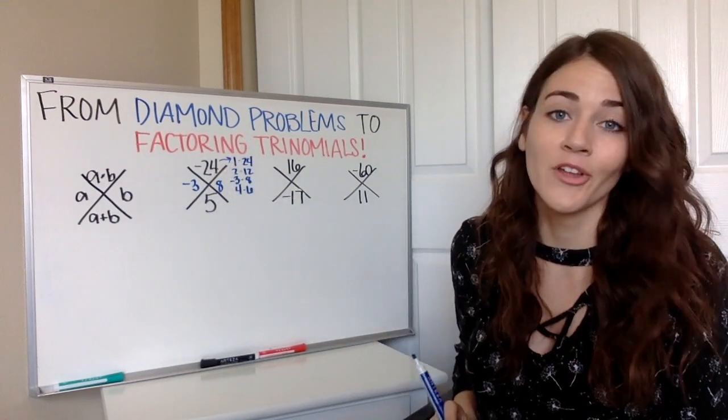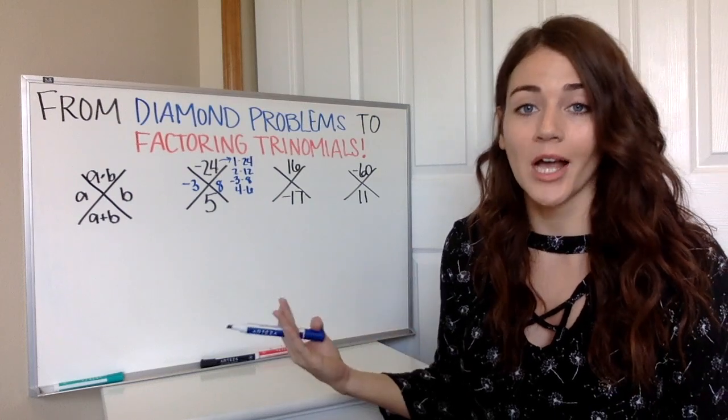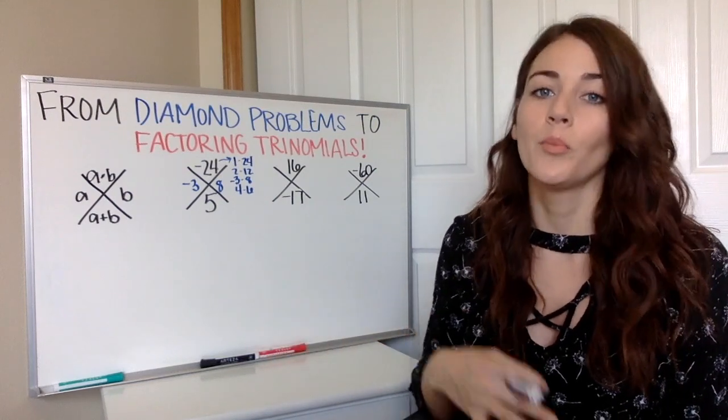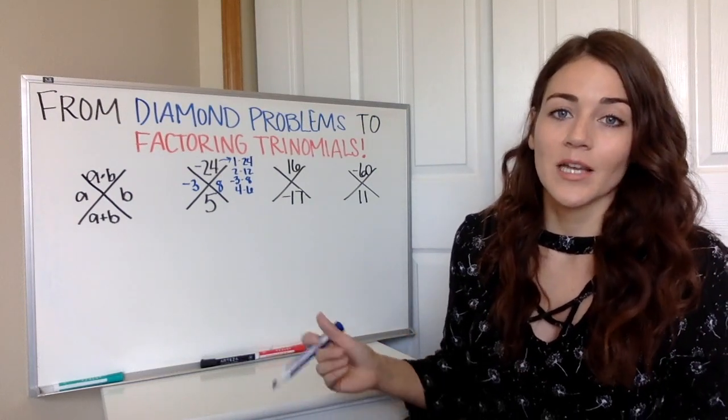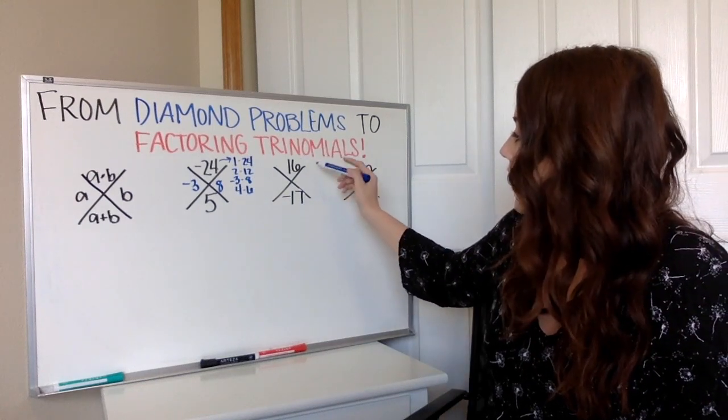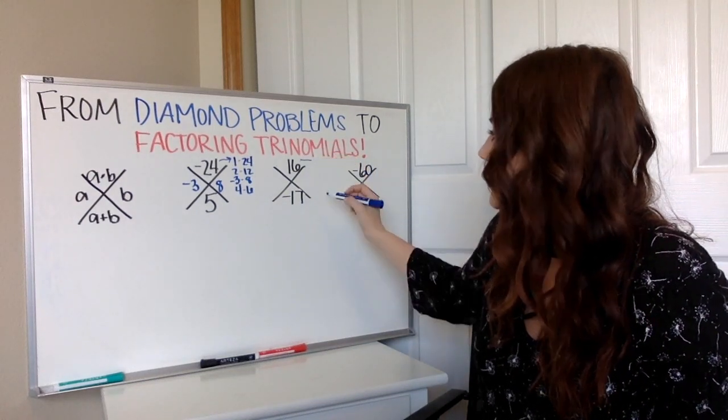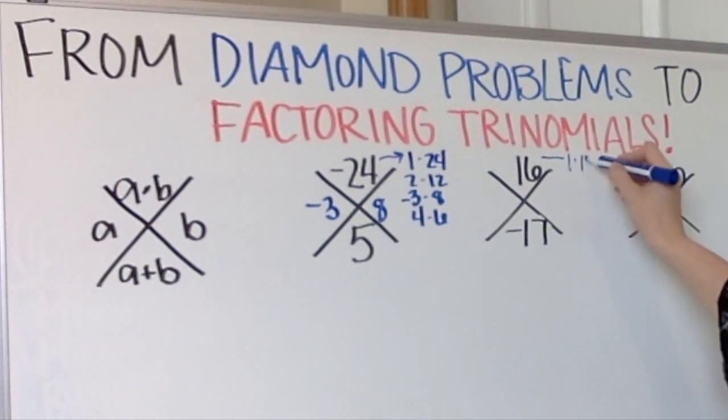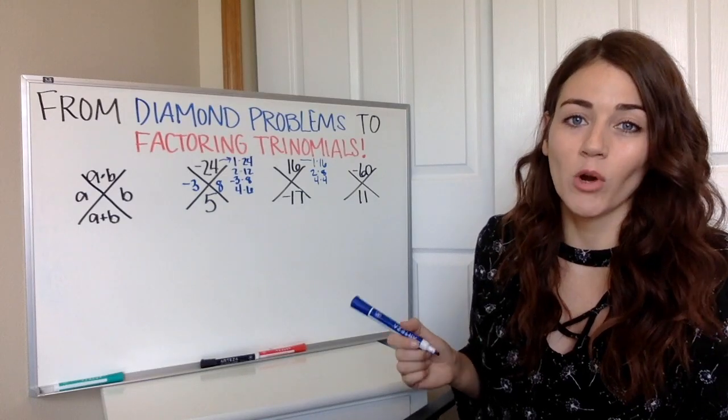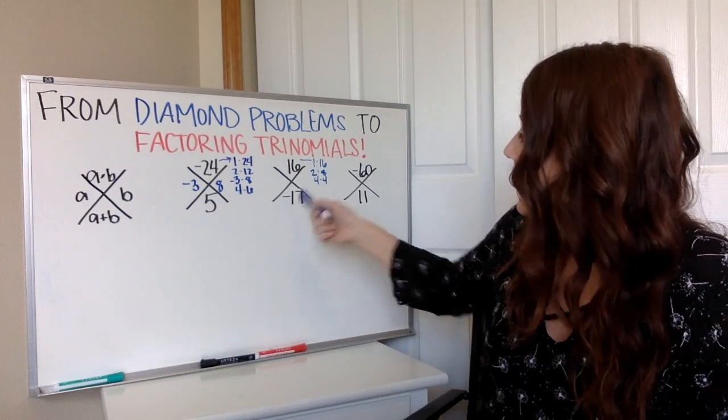If it's positive, you know they're either going to be both positive or both negative. So my second example, you can see when I multiply I get a positive 16. So I'm going to go ahead and list the multiples: 1 and 16, 2 and 8, 4 and 4. This time we want it to add to be negative 17.